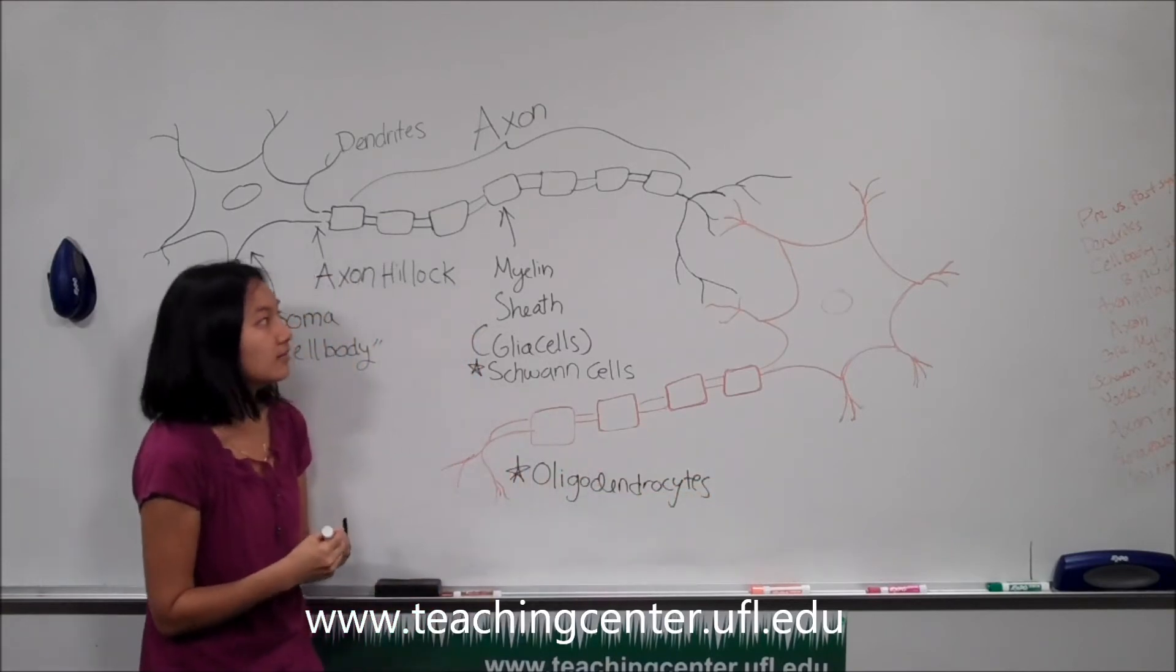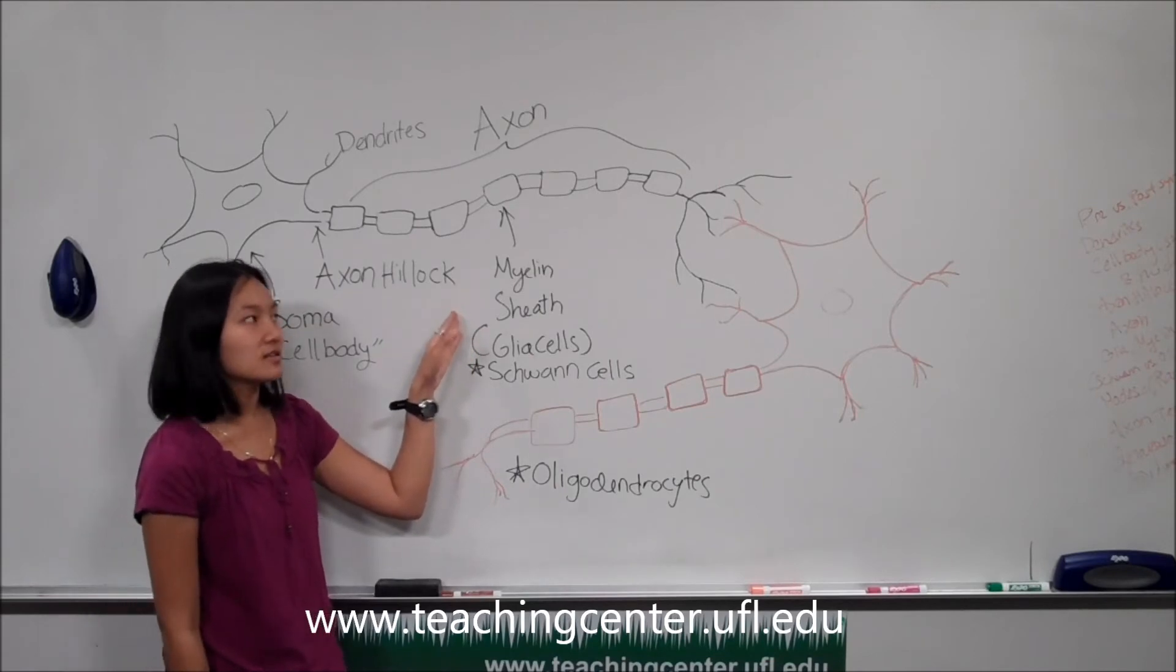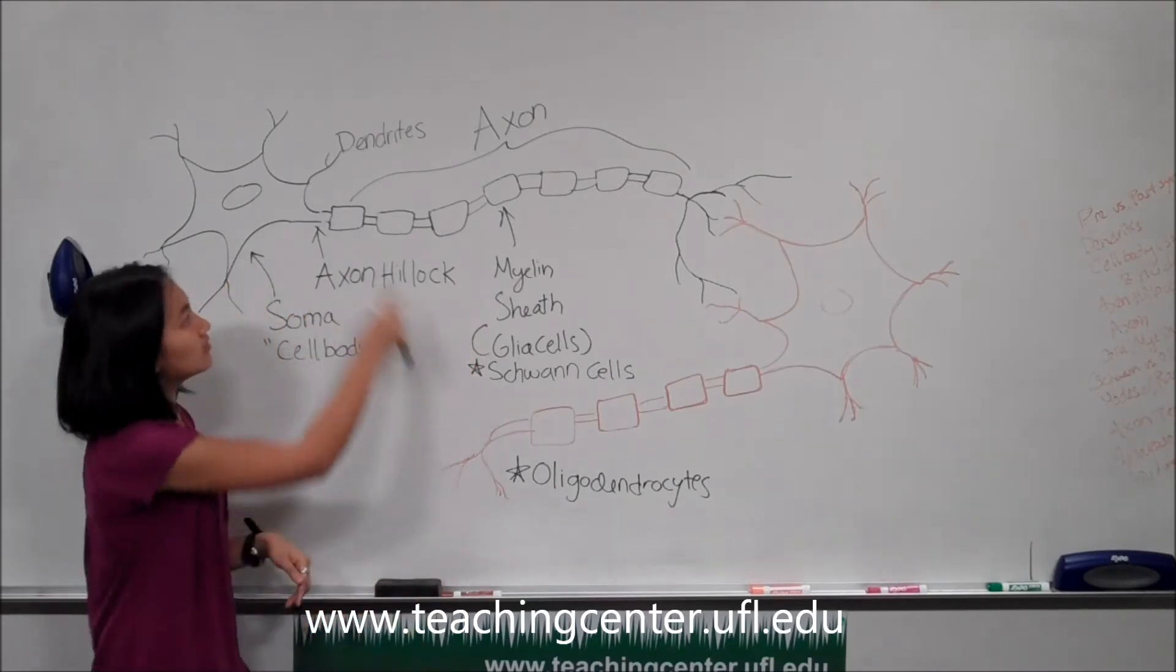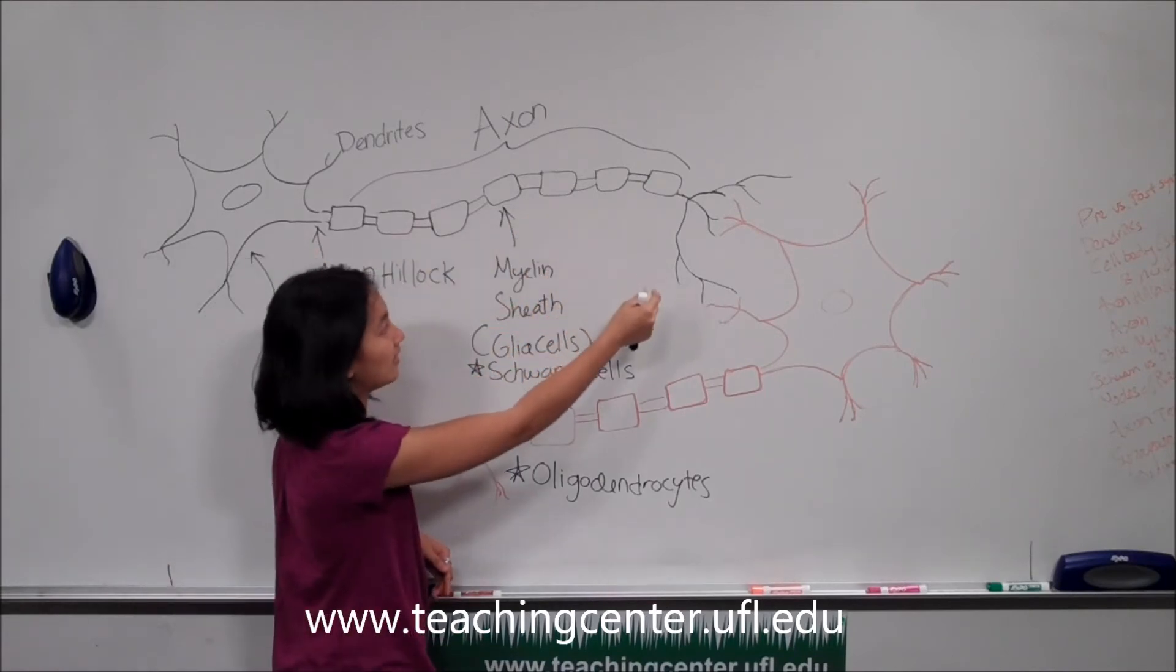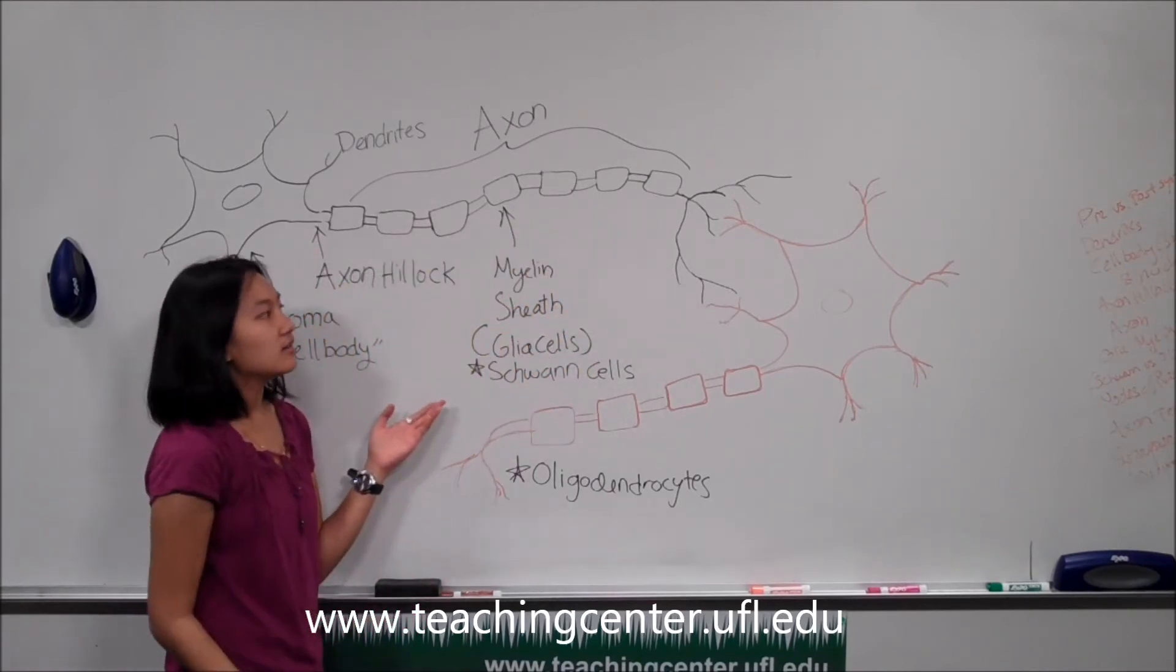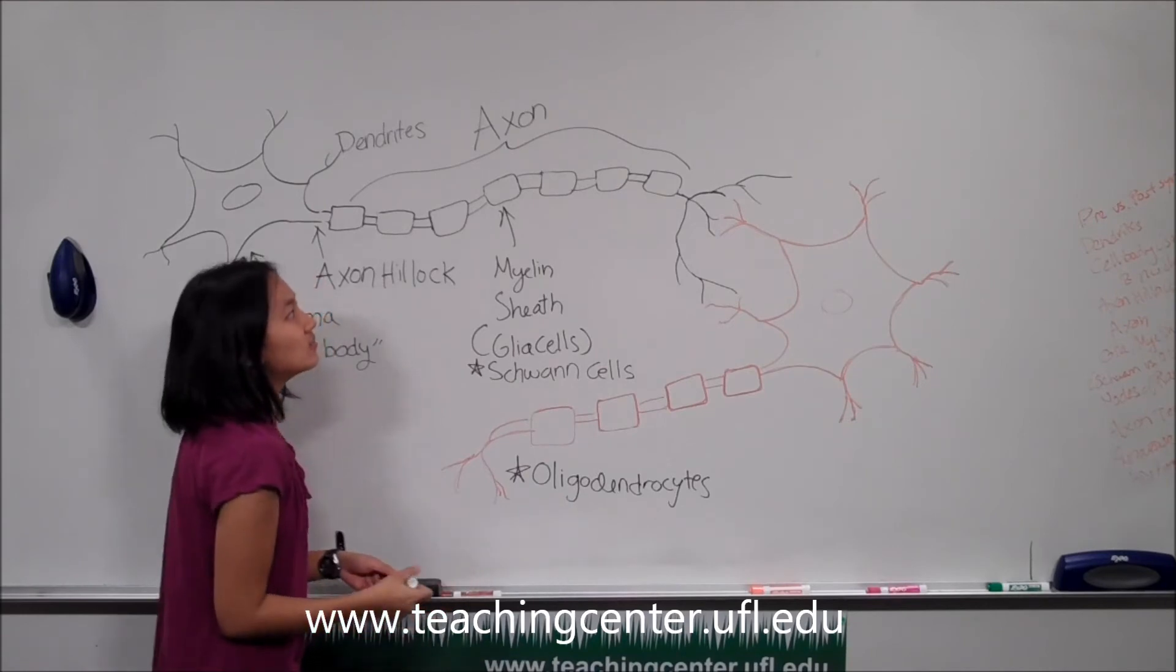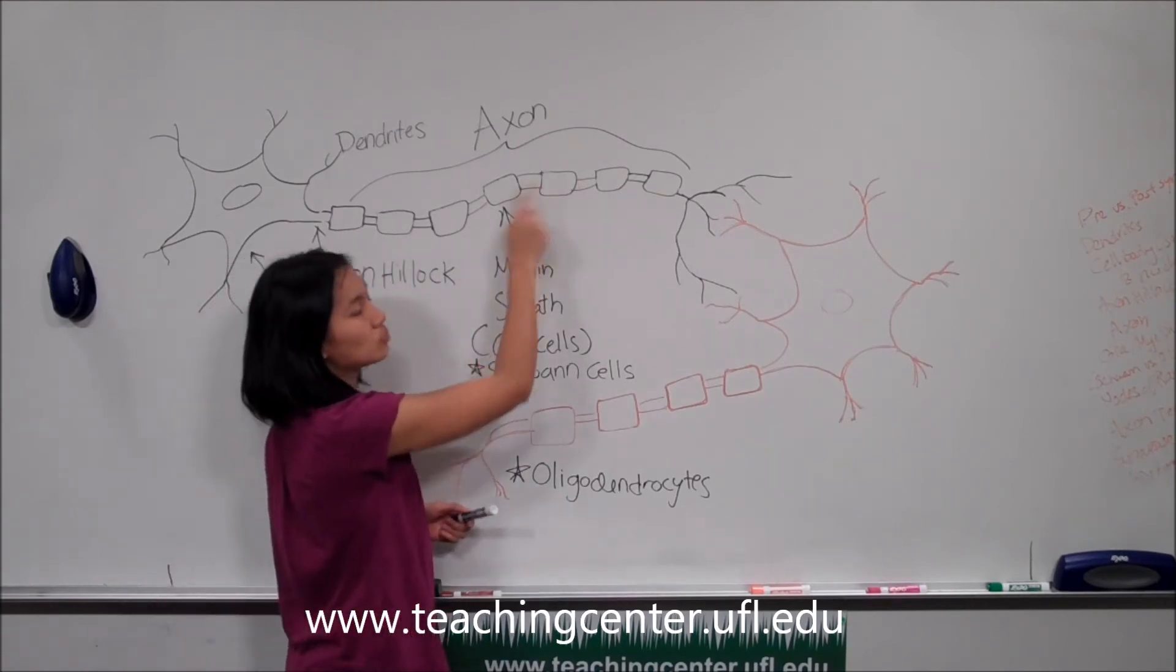And the purpose of the glial cells when they make up myelin sheath is to help propagate the electrical impulse generated at the axon hillock faster down the axon. So most myelin is made up of fat cells and it just helps push the signal quicker.